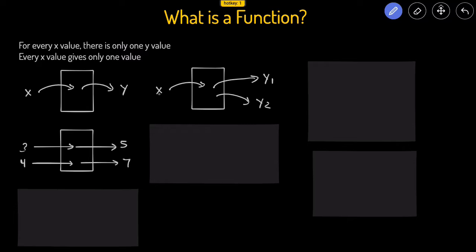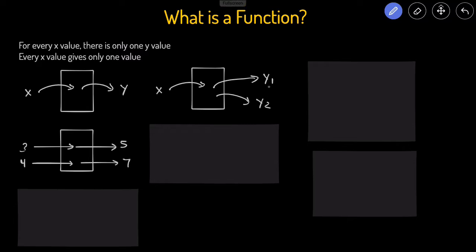This is not a function. If you put in one x but it's spitting out two y values — for example, if we put in a 3 and we get a 5, but if we put in 3 again and we get 6, then that wouldn't be a function, because for every one x, we're getting two y's.